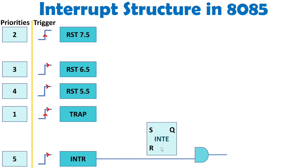This is a set-reset flip-flop for the interrupt enable. With the set terminal, it is essential that the enable interrupt (EI) instruction is written. If EI is executed at set, then only Q equals 1 is possible. Before completing any interrupt you will have to enable this interrupt so that next time whenever another interrupt arises it will get served. This set-reset flip-flop has its set terminal connected with EI, meaning the enable interrupt instruction must get executed before any other interrupt can get service.